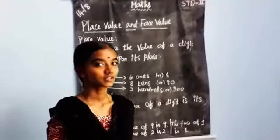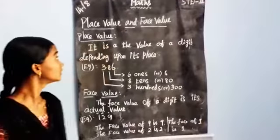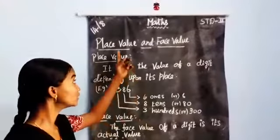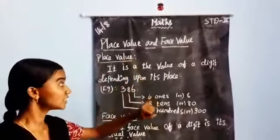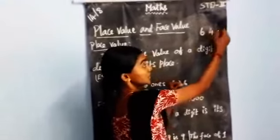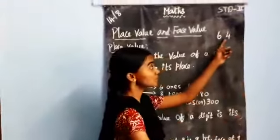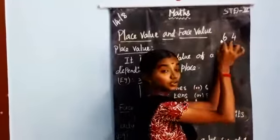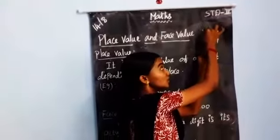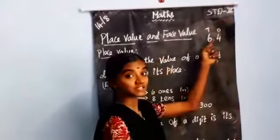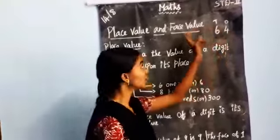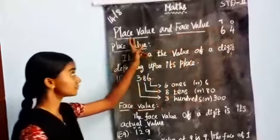Good morning students. We have already studied about place value. Place value means look at the digit — the first digit is denoted to the 1s place, the second digit is denoted to the 10s place. That is the place value. You have studied place value with 2-digit numbers only.